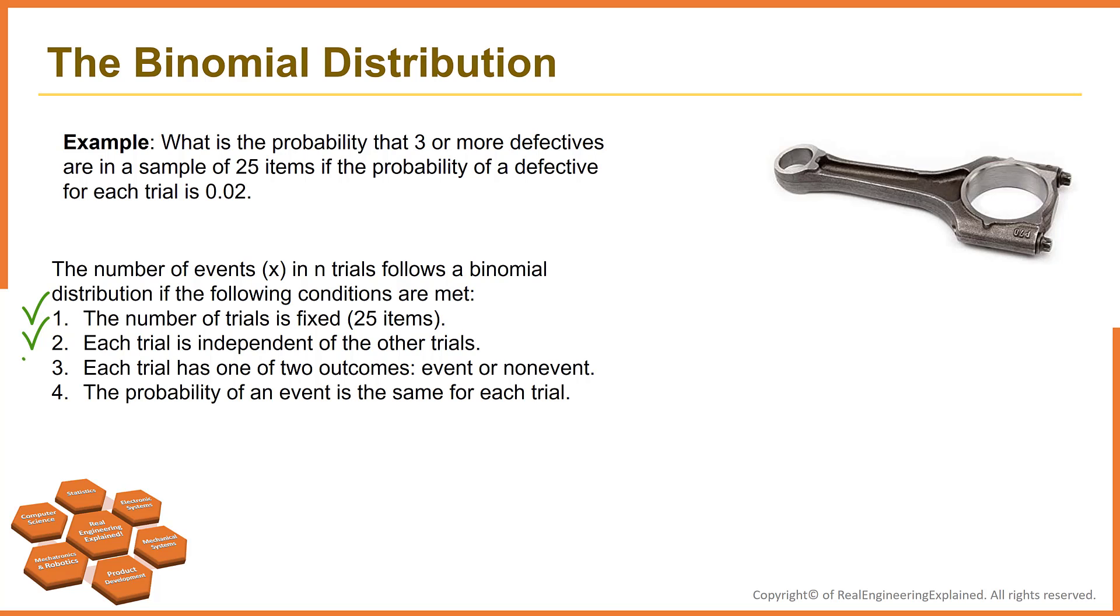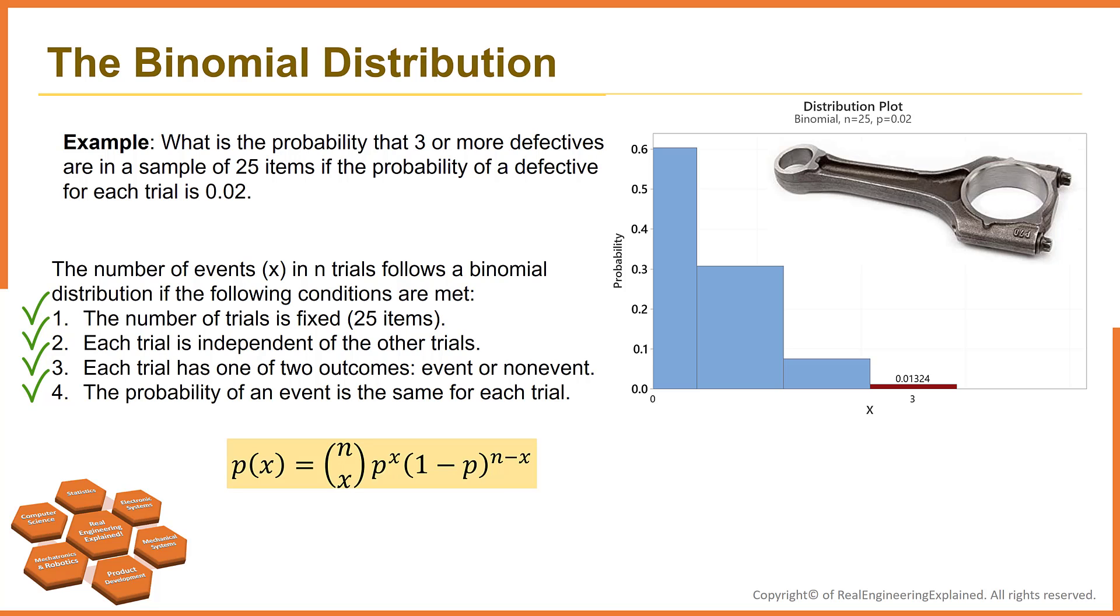Each trial has one of two outcomes, defective or non-defective item. And the probability of an event is the same for each trial, which is 2%.